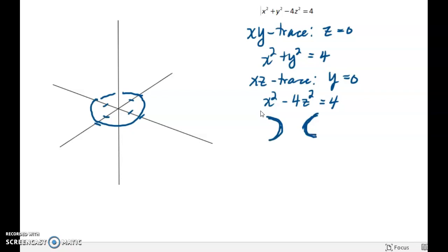And the points that are closest together, those are called the vertices, and those are typically intercepts. In this case, notice that the hyperbola x squared minus 4z squared equals 4 has x-intercepts because when I set z equal to 0, I get x squared equals 4, which means x is plus or minus 2.